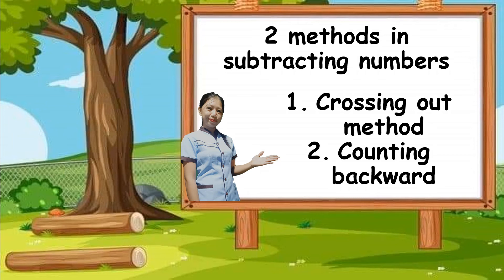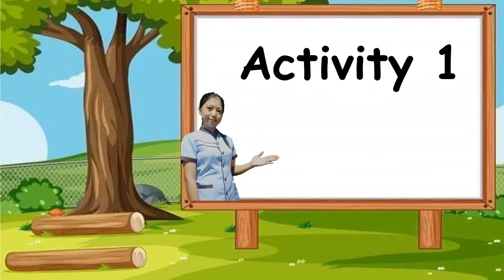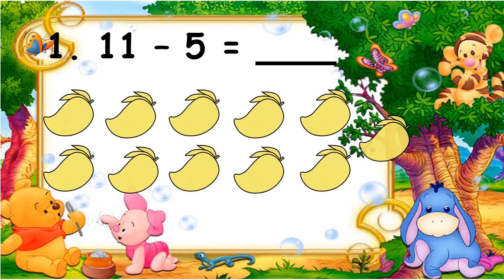Now there is an activity prepared for you. You are to find the difference using the crossing out method. Just choose the letter of the correct answer and write it on your answer sheet. Number one: 11 minus 5 is equal to blank. Is it A, 3; B, 5; C, 7; or D, 6?